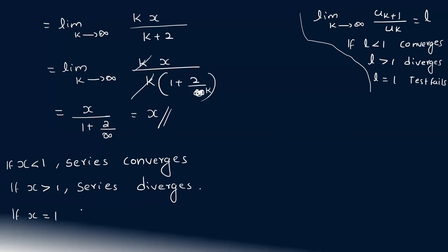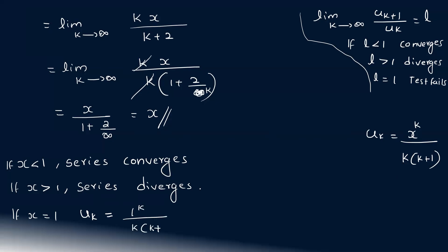Now consider x equal to 1. The general term uk equals x raised to k by k into k plus 1, which becomes 1 raised to k divided by k into k plus 1. That is, uk equals 1 by k into k plus 1.